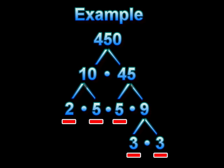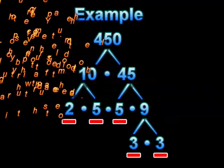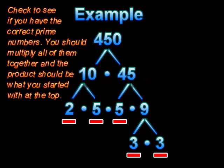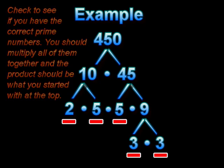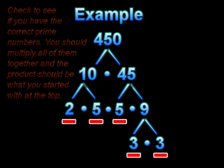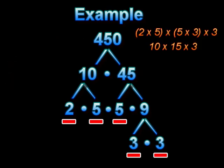Once you have broken your number into all prime numbers, you should multiply those numbers together and you should get the number that you started with all the way at the top of your factor tree. This is a good way to check if you indeed have the right numbers at the bottom of your factor tree. Multiplying all the numbers that you have at the bottom is kind of like doing a reverse factor tree. You are going backwards to see if you can come up with the number 450. And when multiplying all of these numbers together, we can clearly see that we do come up with a product of 450.